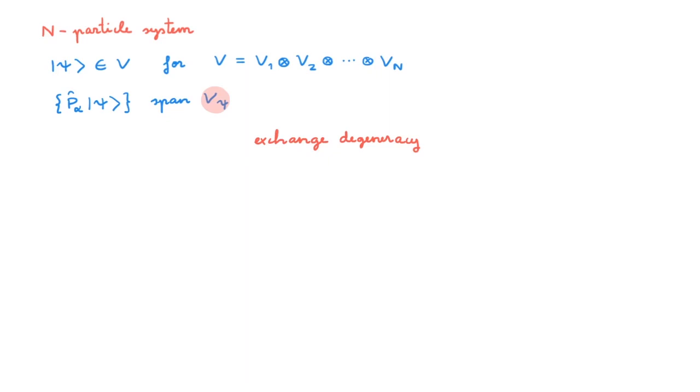So the big question becomes, which of these states describes the physical system? The answer to this question is by no means trivial. In fact, exchange degeneracy forces us to introduce a new postulate to our quantum mechanical formalism to deal with systems of identical particles, the so-called symmetrization postulate.